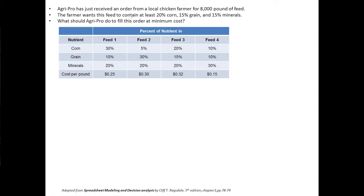Let me go to the next slide. I summarized the key information here. The order is 8,000 pounds, these are the requirements, and these are the given information. The decision variables will be F1, F2, F3, and F4 - pounds of feed one, two, three, four to put in the mix.